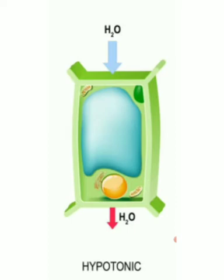Such a solution is known as a hypotonic solution. Hypo means less — hypotonic solution means a less concentrated solution. The water moves from the region of higher concentration to the region of lower concentration. Water molecules are free to pass across the cell membrane in both directions — it can come in and it can go out — but more water will come into the cell than will leave.